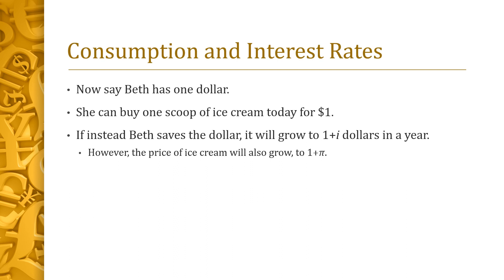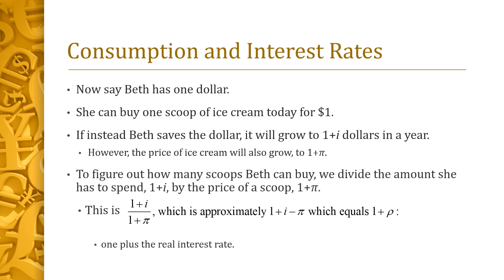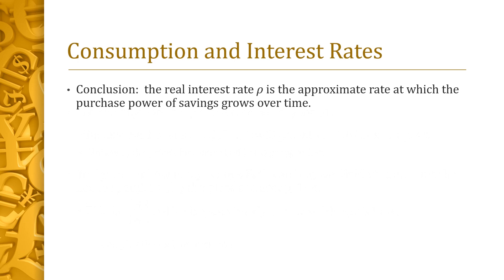But the price of ice cream will have risen at the inflation rate of pi, so a scoop will cost 1 plus pi dollars. Beth can purchase 1 plus i divided by 1 plus pi scoops. It is a mathematical fact that if i and pi are small, then 1 plus i divided by 1 plus pi is approximately equal to 1 plus i minus pi, or equivalently 1 plus the real interest rate rho. Thus, the real interest rate rho captures the rate at which the balance of a savings account grows in terms of purchasing power.